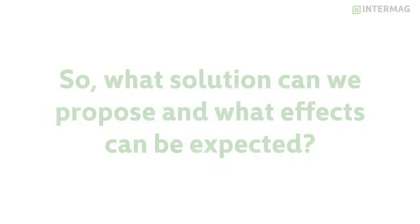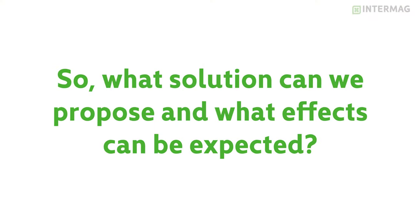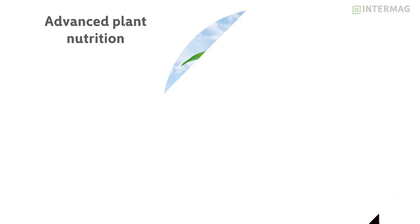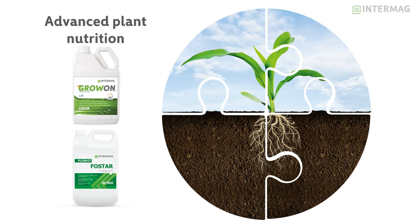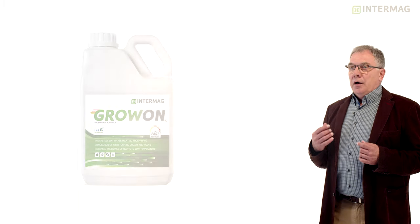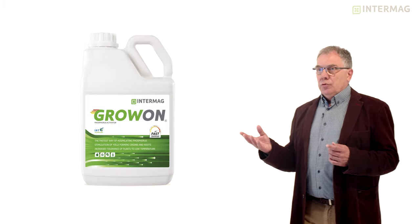What solution can we propose and what effect can we expect in terms of phosphorus availability to plants? I would like to bring your attention to two very special products of Intermag. The first one is GrowOn and the second is Fostar, Plonvit Fostar. Both products are recommended for foliar application. Let's start from GrowOn. It is a very unique special product.